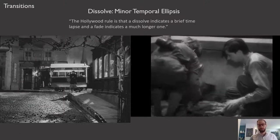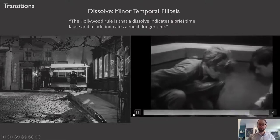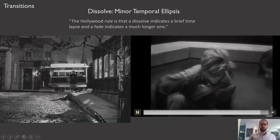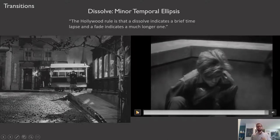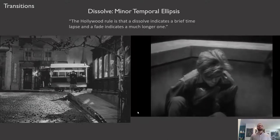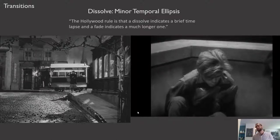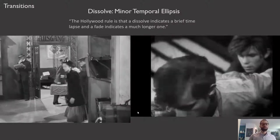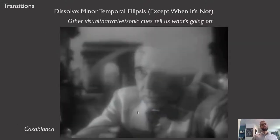In A Man Escaped, there's a dissolve. Many parts of this escape scene suggest long periods of time, but this dissolve suggests it's not a long period of time — we're merely cutting out some of that time to get to the next point of the action. A dissolve is a minor temporal ellipsis.